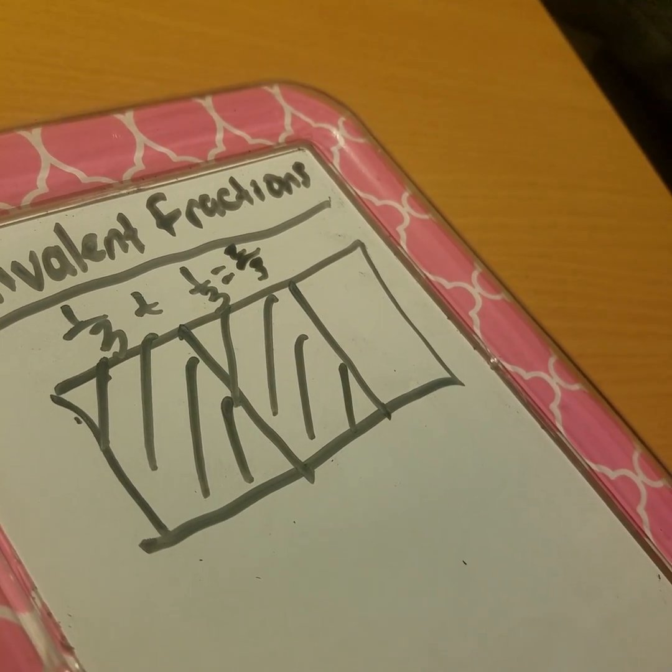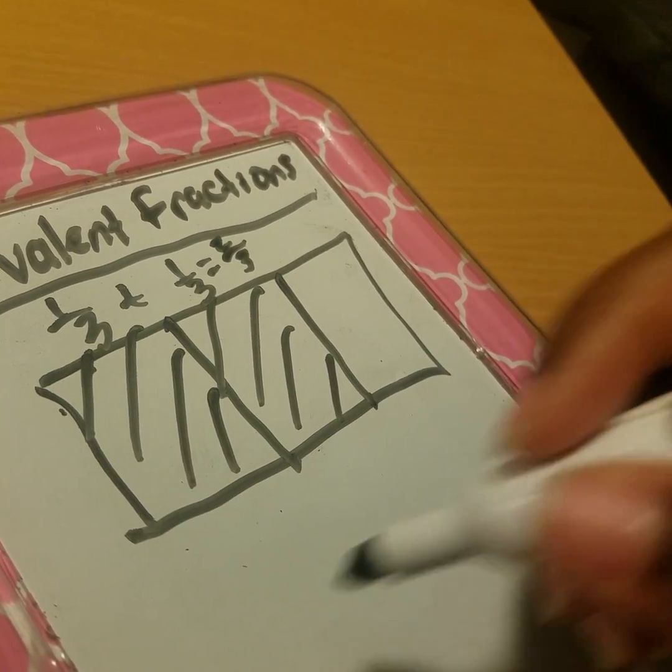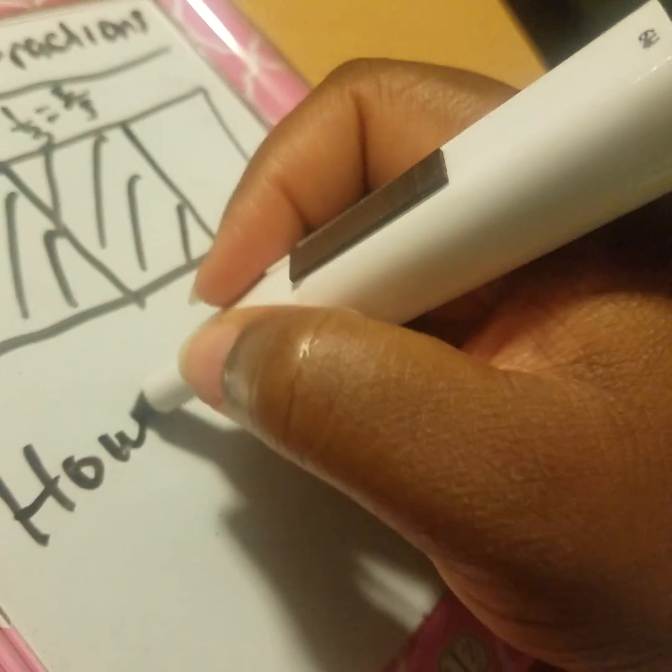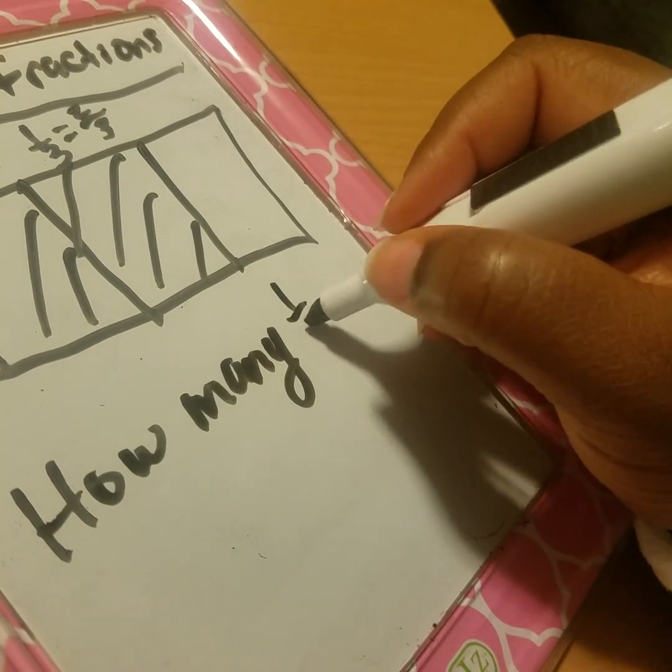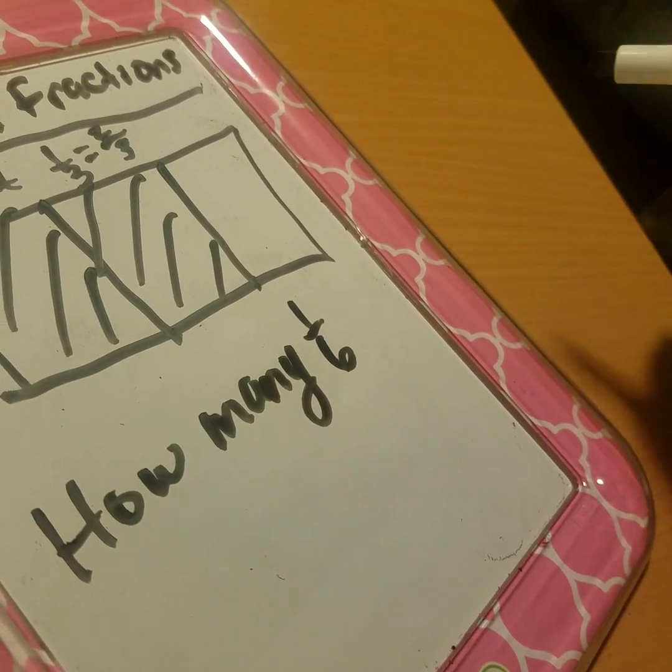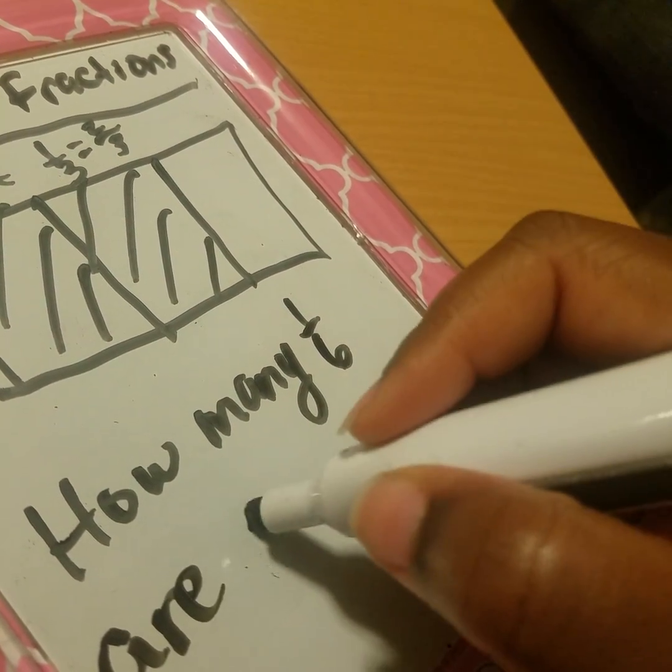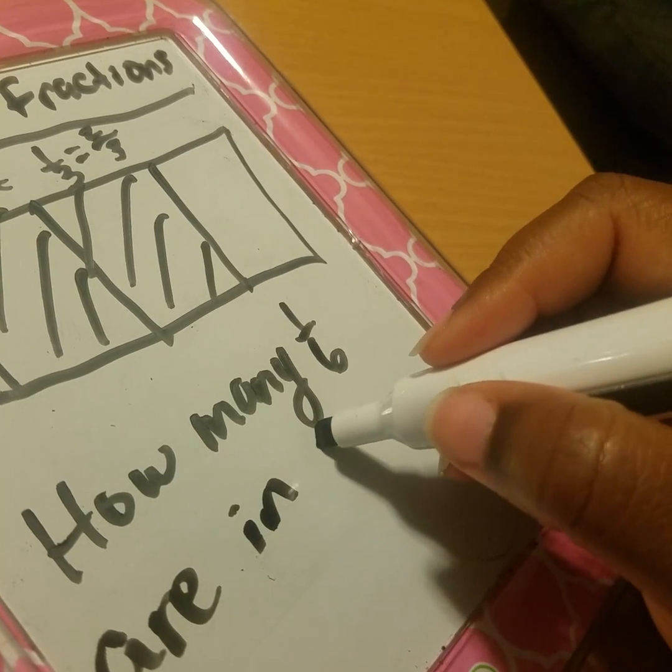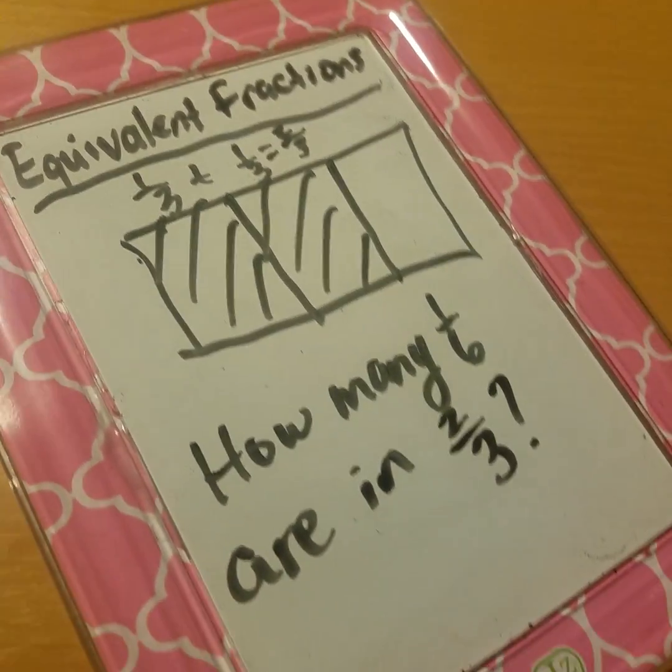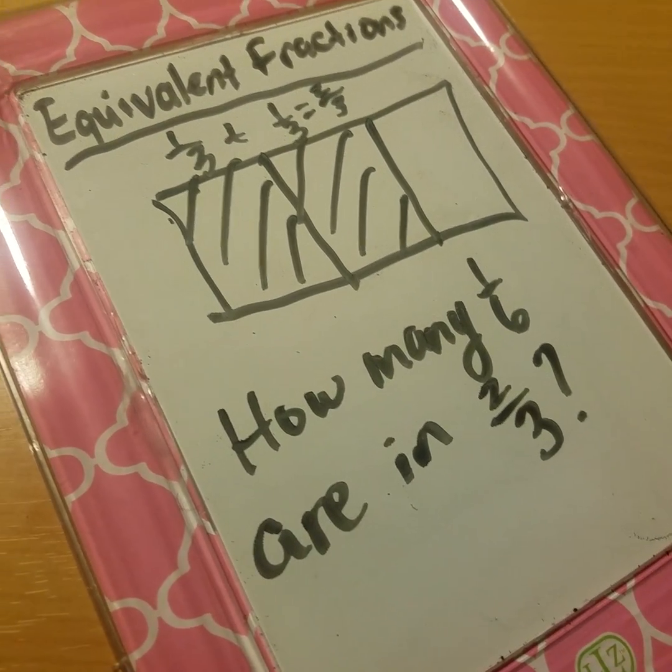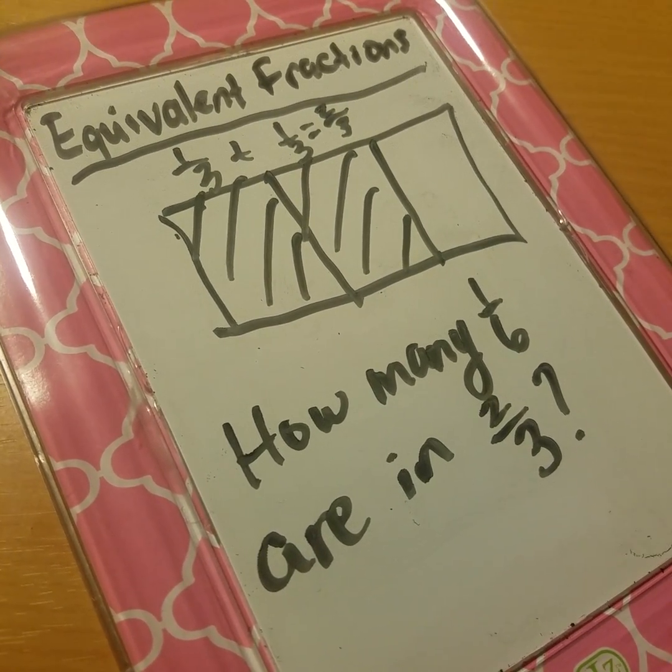Now what if I want to find out how many one-sixths are in two-thirds? How can I figure that out, and how is that related to equivalent fractions? We'll find out in a moment.